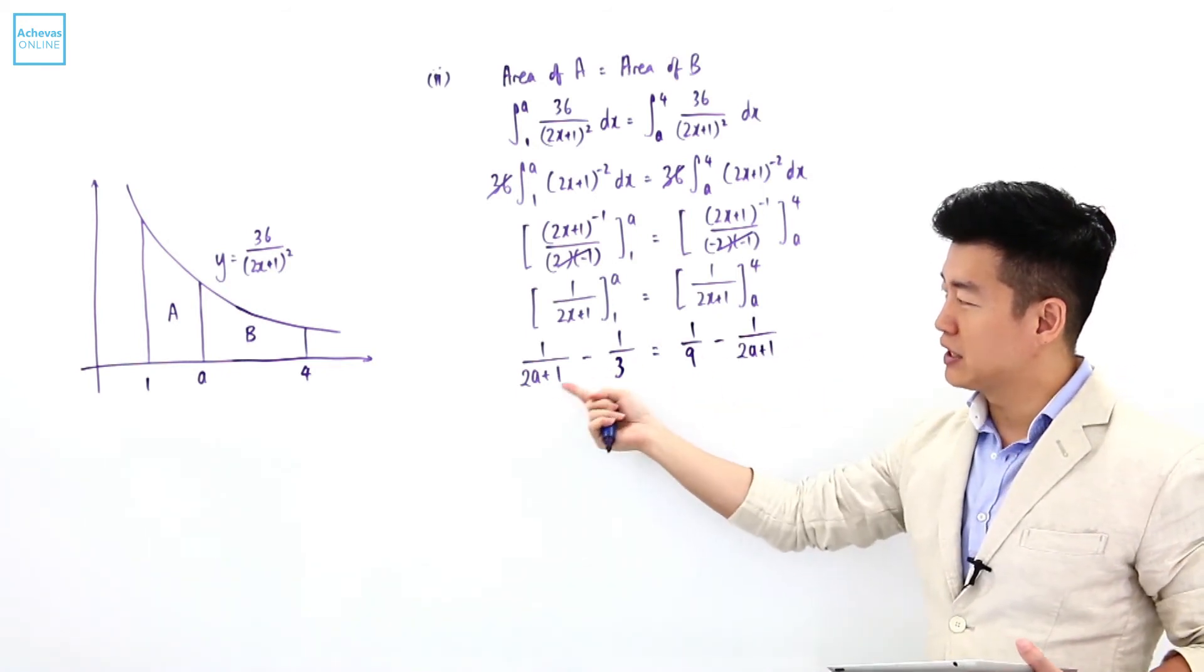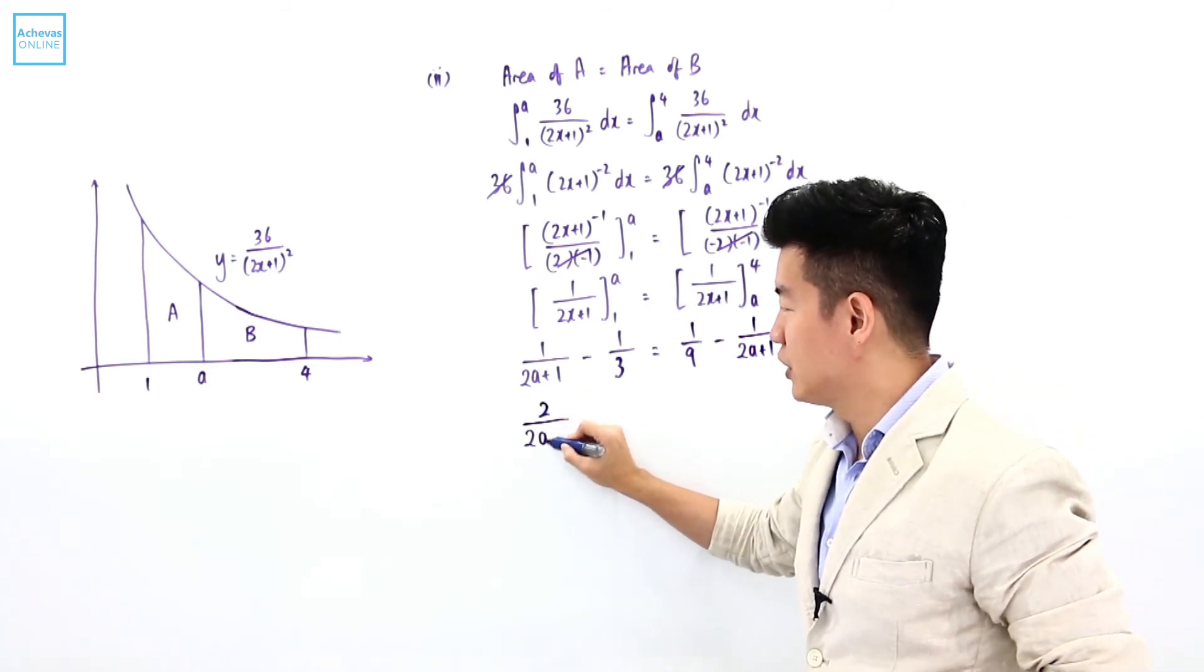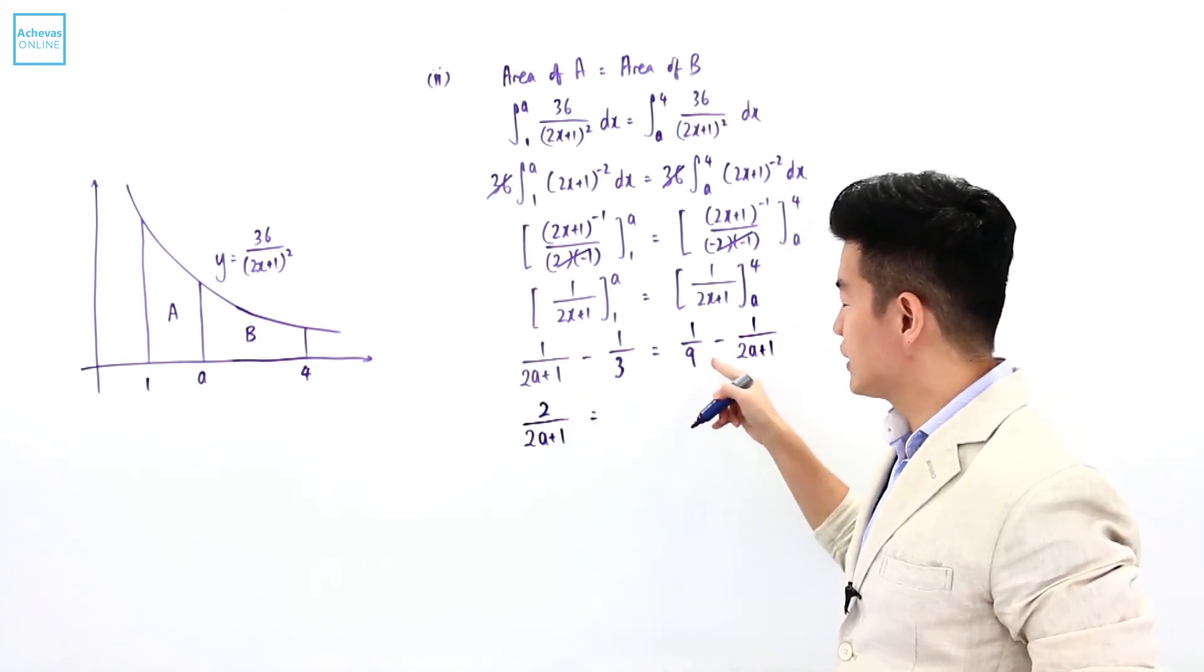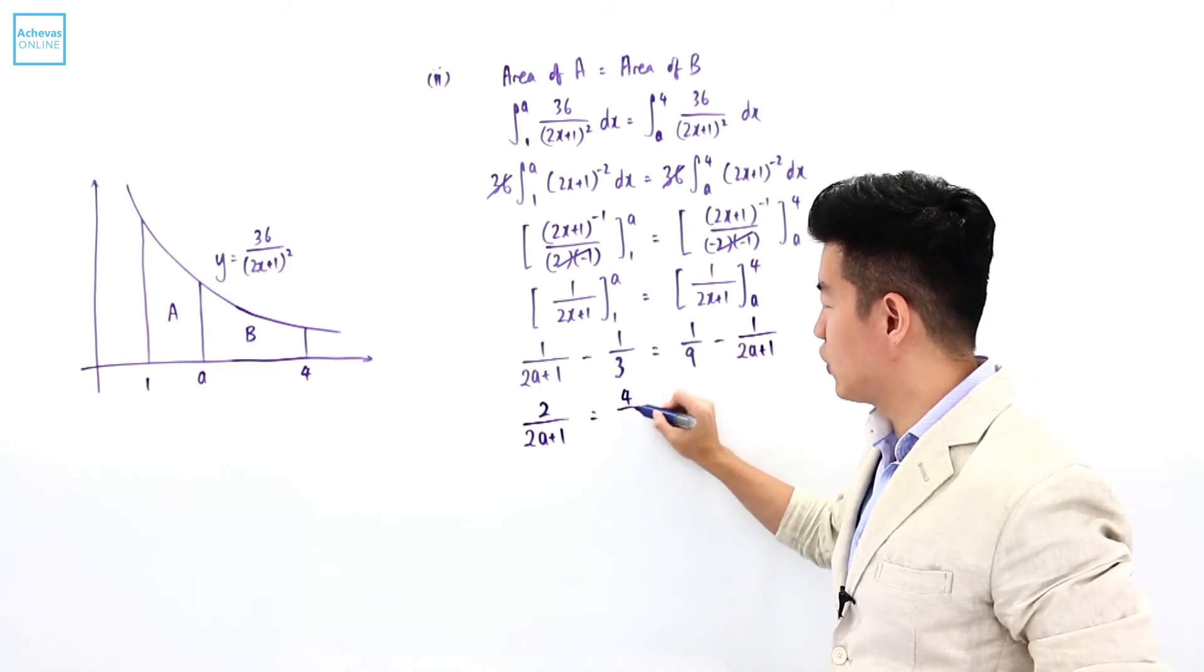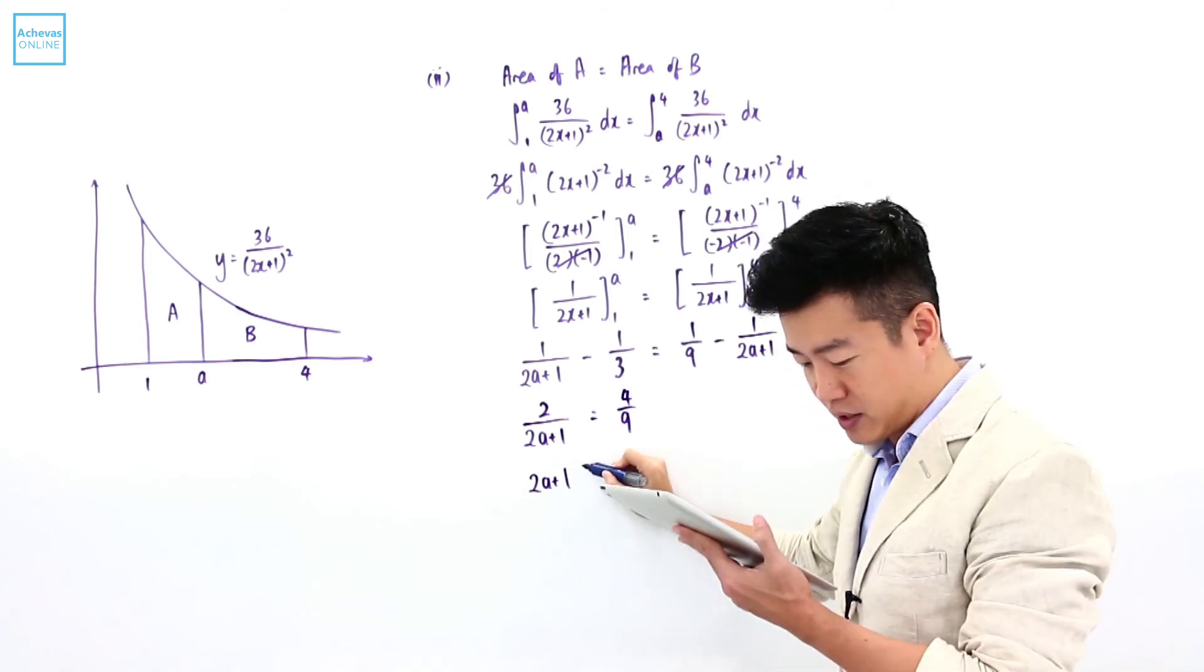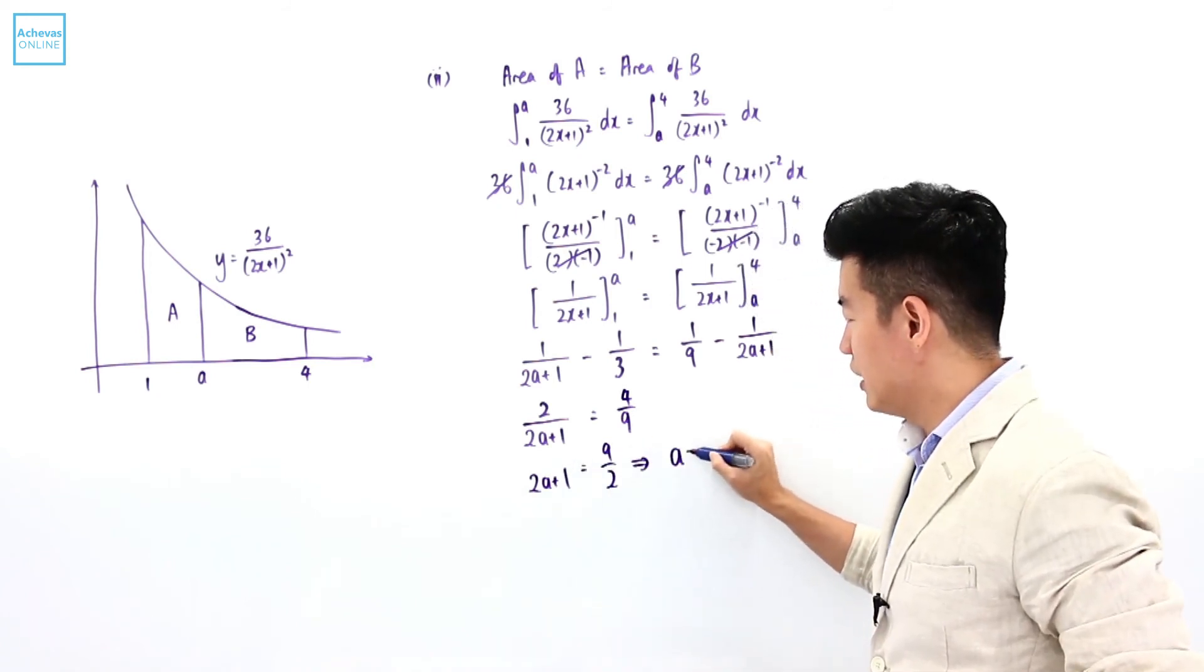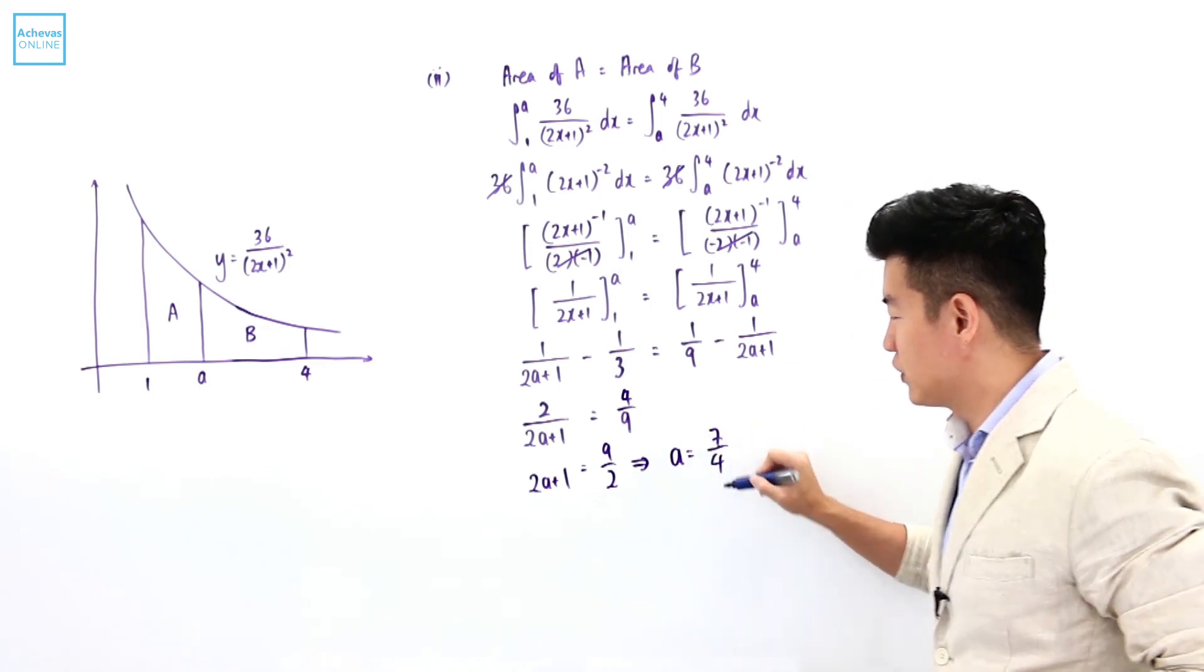Bringing this entire term to the left-hand side to combine gives 2/(2A + 1), and bringing this to the other side gives 4/9. This means that 2A + 1 = 9/2, so A works out to be 7/4.